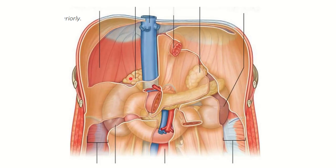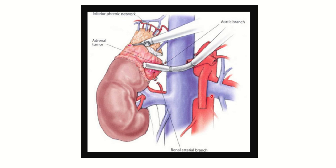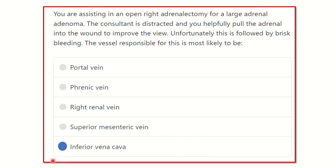In the second picture, we can see the right suprarenal gland and the right kidney. Traction of the right suprarenal gland may cause injury to the large inferior vena cava. In this adrenalectomy procedure image, we can see the diathermy — traction of the suprarenal gland may injure the vessels of the inferior vena cava. So our final answer is the inferior vena cava.